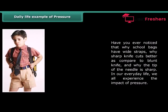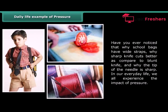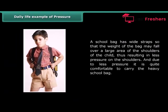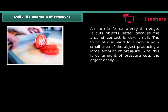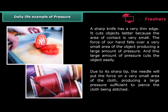Daily life examples of pressure. Have you ever noticed why school bags have wide straps? Why does a sharp knife cut better compared to a blunt knife? And why is the tip of a needle sharp? A school bag has wide straps so that the weight of the bag falls over a large area of the child's shoulders, resulting in less pressure — making it comfortable to carry. A sharp knife has a very thin edge and cuts objects better because the area of contact is very small, producing a large amount of pressure that cuts the object easily. Similarly, due to its sharp tip, a needle puts force on a very small area of the cloth, producing a large pressure sufficient to pierce the cloth being stitched.